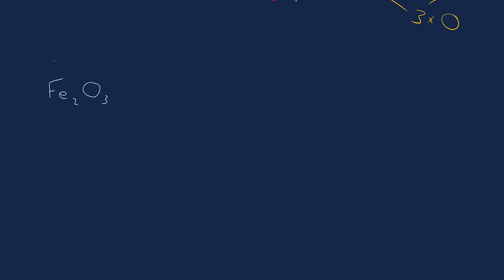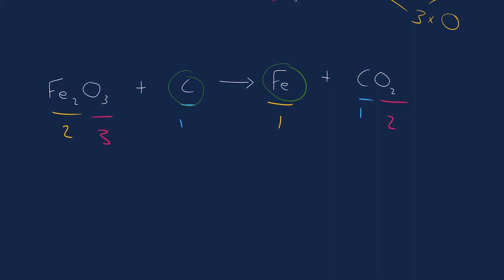Next one: iron oxide reacting with carbon. Let's count everything up to begin with. Two iron on the left, one iron on the right, three oxygen on the left, two oxygen on the right, one carbon each side. You'll notice immediately the carbon on one side and the iron on the other can be isolated. So I'm not going to worry about them just yet — I'm going to focus on carbon dioxide and iron oxide to balance them.